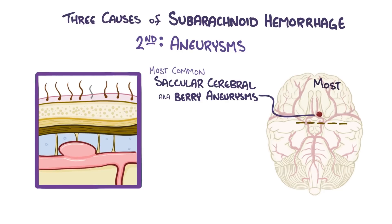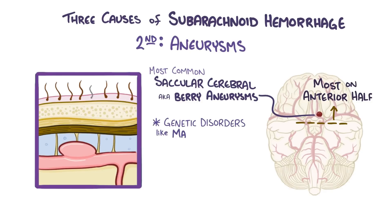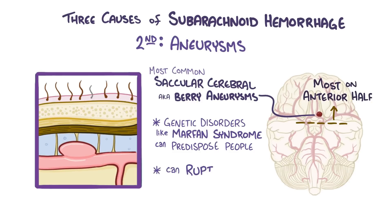Most saccular cerebral aneurysms arise in the anterior half of the Circle of Willis, whereas only a few arise in the posterior half. Some genetic disorders like Marfan syndrome can cause a defect in the connective tissues of arteries and can also predispose individuals to having saccular aneurysms. Aneurysms can burst open when there's an increase in intracranial pressure, like what you might feel when you're moving a large sofa into the living room.